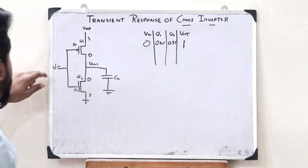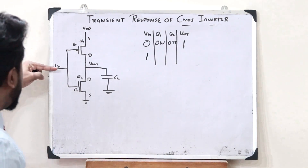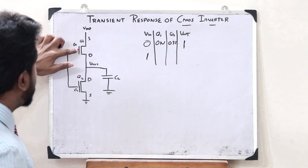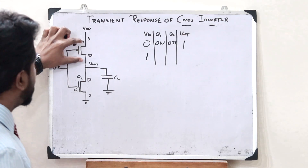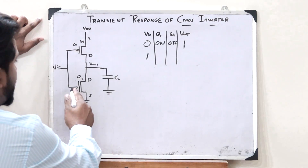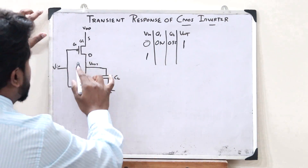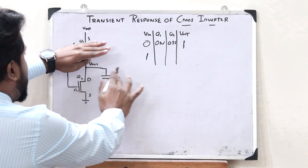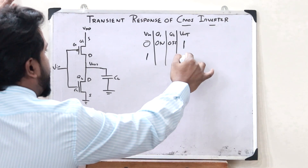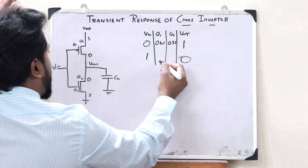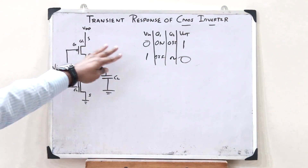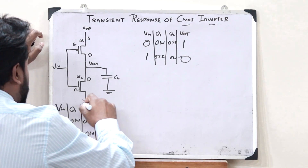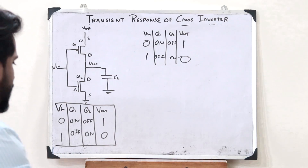If we give 1 as the input, in the case of the PMOS transistor, when 1 is the input it turns off. But the NMOS transistor turns on. Since the PMOS is off, the circuit is broken on the VDD side, and therefore we don't get any high voltage at the output — the output is 0. This is the working of a CMOS inverter, and I have drawn the truth table of a CMOS inverter here.